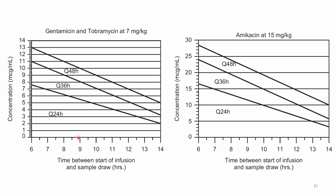For example, if 9 hours later you get a random level of 3, that data point falls within the Q24 zone, meaning the patient is clearing well, so you continue every-24-hour dosing. If the same patient had a level of 7 at 9 hours, that falls above the Q24 line but within the Q36 zone, so you change the frequency to every 36 hours. Similarly, a level of 9 at 9 hours would move you to every 48 hours, and so on.